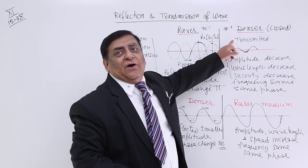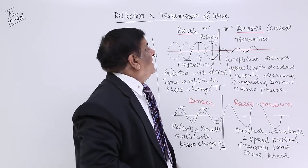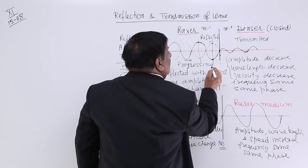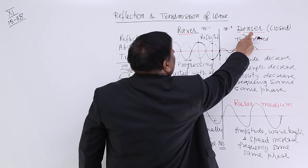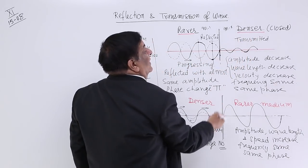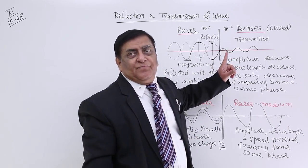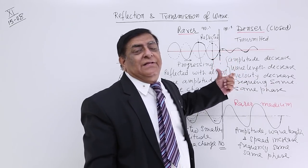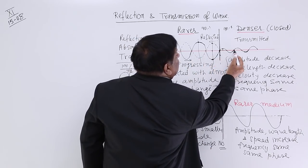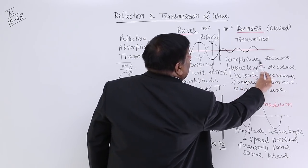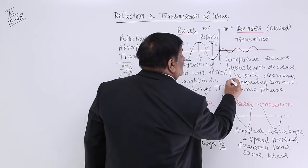Now, if transmission is allowed, a small part of the energy is transmitted. When it is transmitted, the amplitude decreases — because if it was moving the lighter medium by 5 mm, it cannot move the heavier part by 5 mm; maybe it can only move it by 1 mm. So the amplitude decreases. Similarly, the speed decreases, which means the wavelength also decreases. So the wavelength that was here has decreased to a smaller value.